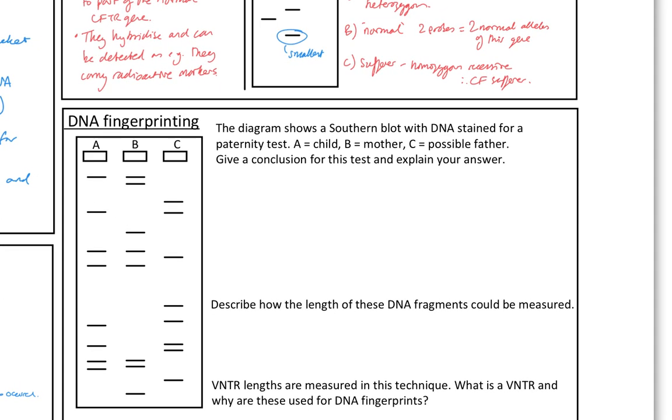And then DNA fingerprinting. So diagram shows a southern blot with DNA stain for a paternity test. So this would be a nylon filter. And then some DNA is being put on it. A is the child. B is the mother. And C is the possible father. Give a conclusion for the test. Well if the child belongs to both parents, all of the bands on the child need to match the parent. Remember we measure these VNTRs. And you inherit one from one from each parent. Let's highlight the mother ones first. So there's one from that. Two. Three. All those match. Is that a match there? I think it is. Four. So all those four match. Let's see if any of the males of the fathers match. So that one looks like a match. No. There's no match on that one. Let's go in between those two. And no match on that one.